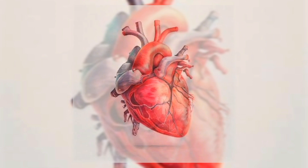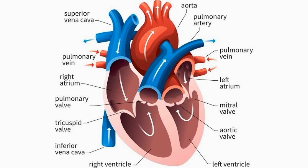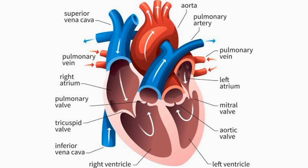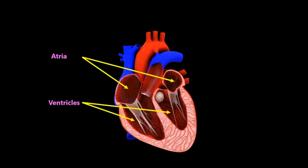The human heart is a remarkable organ responsible for pumping blood throughout the body, delivering oxygen and nutrients to cells and organs while removing waste products. It consists of four chambers and various important structures — two ventricles and two atria.